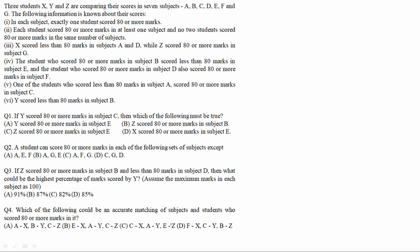It was given that three students X, Y, Z are comparing their scores in seven subjects A to G. The following conditions are known about their scores. First, in each subject exactly one student scored 80 or more marks — so 80-or-more marks will appear exactly seven times total. Second, each student scored 80 or more marks in at least one subject. And no two students scored 80 or more marks in the same number of subjects. Let's make a table.